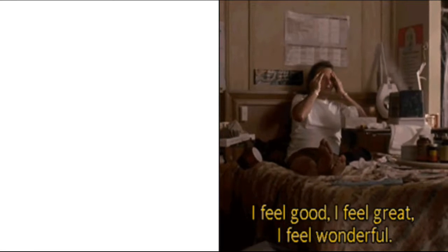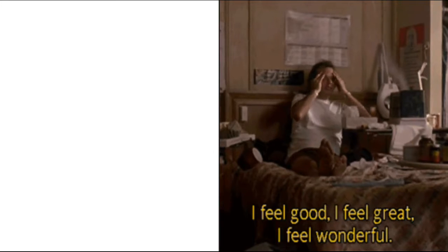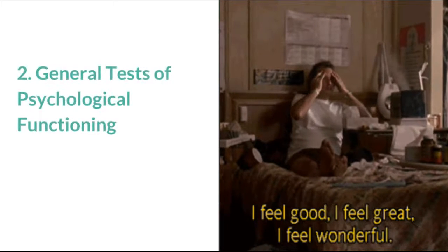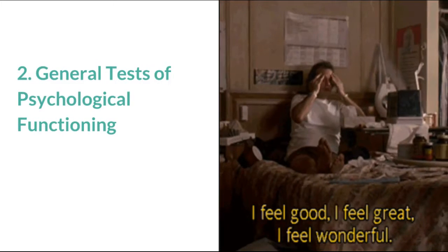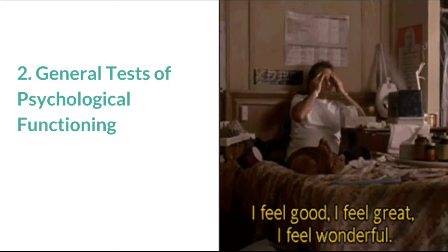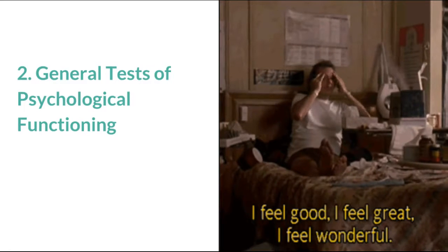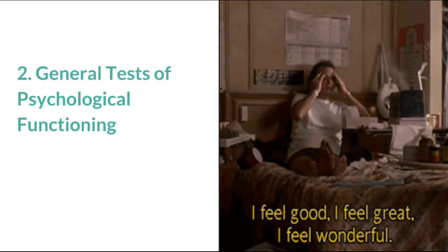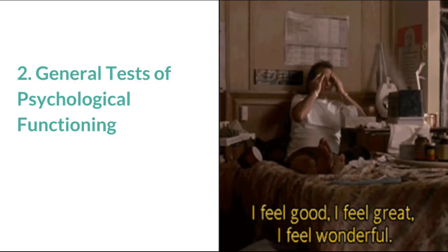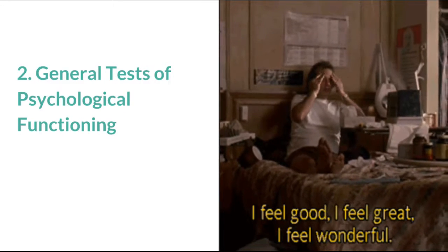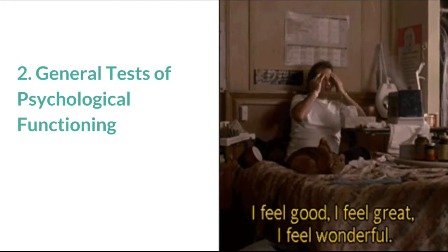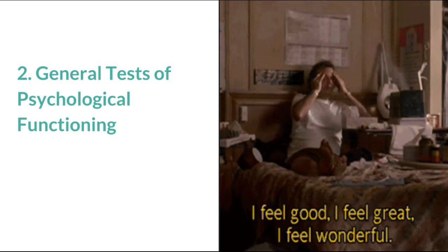The second type of psychological test is general tests of psychological functioning. In this scene from What About Bob?, Bob is telling himself, 'I feel good, I feel great, I feel wonderful.' He's doing this in order to make him feel better in general.